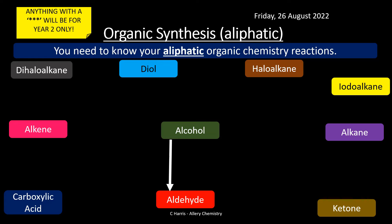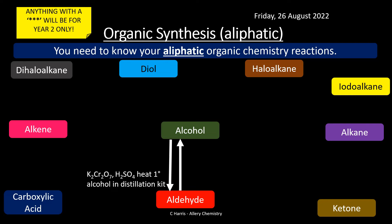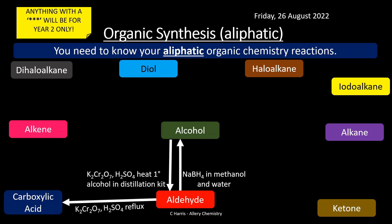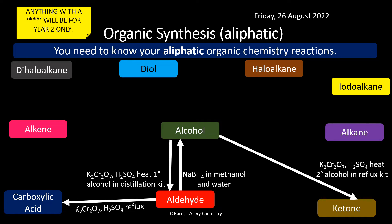Alcohol to aldehyde: potassium dichromate and sulfuric acid, heating with a primary alcohol in a distillation kit. Aldehyde to alcohol: sodium borohydride in methanol and water. Aldehyde to carboxylic acid: potassium dichromate, sulfuric acid catalyst, and reflux. Alcohol to ketone: potassium dichromate, sulfuric acid, and heat — this uses a secondary alcohol to form a ketone.